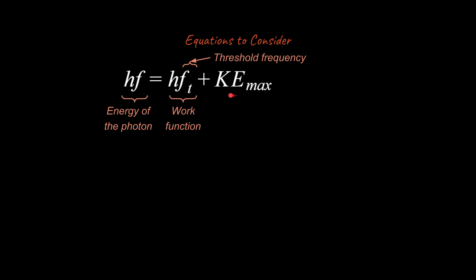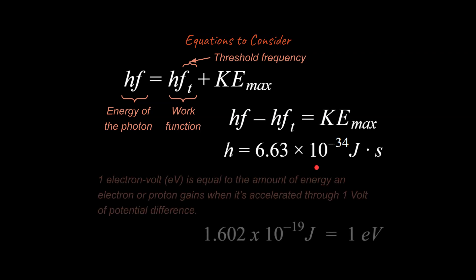And any of the energy left over is going to be the maximum kinetic energy of the electron that's kicked off of the atom. So we can rearrange this equation, and if we do rearrange it for the kinetic energy of the kicked off electron, and we remember that this is going to be Planck's constant, then we can work with this.